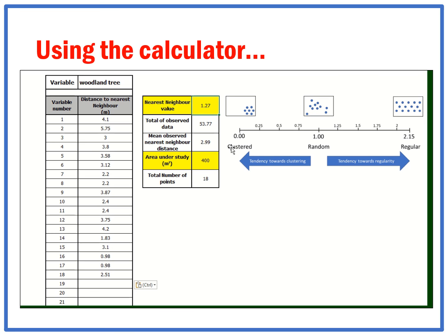Remember, if it's zero, it goes all the way to clustered, and 2.15 shows a regular pattern.